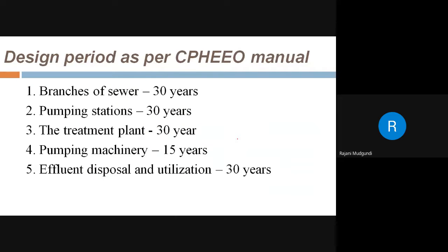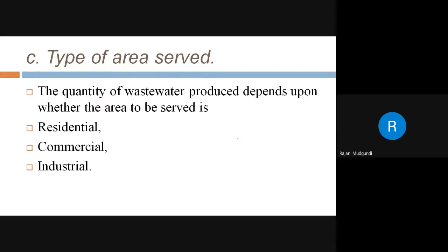Design periods as per CPHEEO manual: for branch sewers, design period is 30 years; for pumping stations and treatment plants, also 30 years. Design period means the useful life considered — after 30 years the system may become obsolete though still functioning. Pumping machinery has a design period of 15 years; effluent disposal and utilization systems have a design period of 30 years.